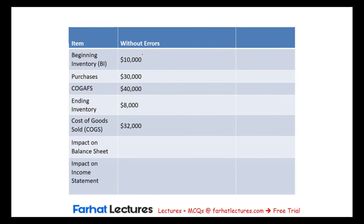Let's assume a company has a beginning inventory of $10,000 and purchases of $30,000. The cost of goods available for sale would be the addition of the beginning inventory and the purchases — $10,000 plus $30,000 equals $40,000. Those are the goods available during the whole year. The company didn't sell all of these goods because we still have an ending inventory of $8,000. The cost of goods sold is $40,000 minus $8,000, which is $32,000. These are our numbers without any errors.